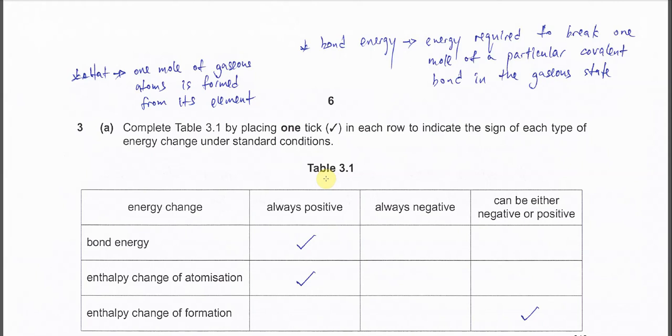Question 3a. Complete table 3.1 by placing one tick in each row to indicate the sign of each type of energy change. So we have three energy changes: bond energy, enthalpy change of atomization, and enthalpy change of formation.